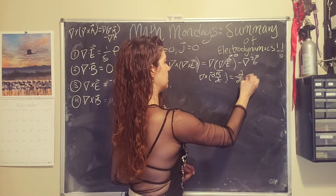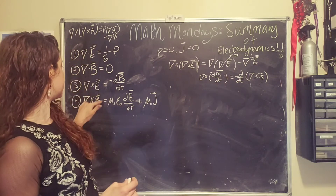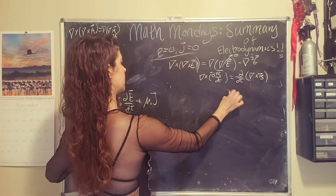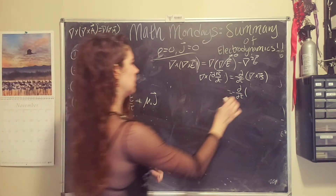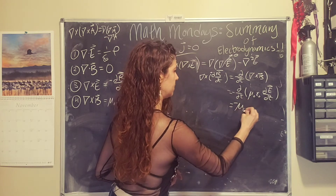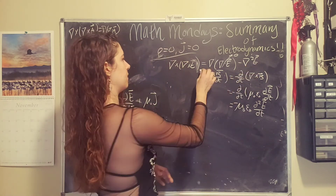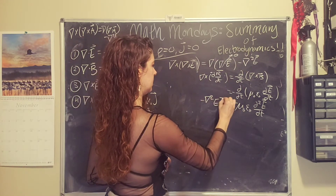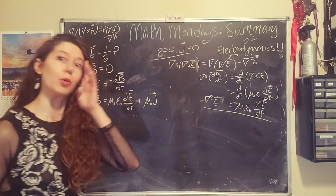We want to get rid of all of the magnetic field terms, so we replace del cross B using Ampere's law. That J term is zero in vacuum. So we end up with negative d/dt of mu naught epsilon naught dE/dt, which gives us negative mu naught epsilon naught d² E/dt². Putting it together: the del dot E term is zero, the negatives cancel, and we end up with del squared E equals mu naught epsilon naught d² E/dt². That's equation number one.